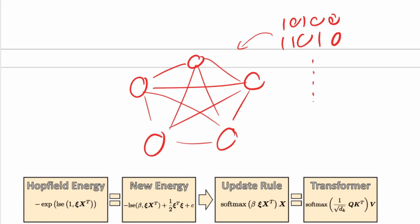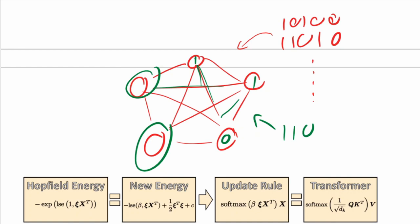If you have stored a pattern, you will then be able to retrieve it. You retrieve a pattern in these old-style Hopfield networks by providing a partial pattern. So you'd say, for example, I want a pattern that starts with one-one-zero, and you give that to the network. There would be a so-called update rule - an internal rule that would adjust the values of the remaining neurons to what's most compatible with the network weights. If the weights have been adjusted correctly, you'd retrieve the full pattern.